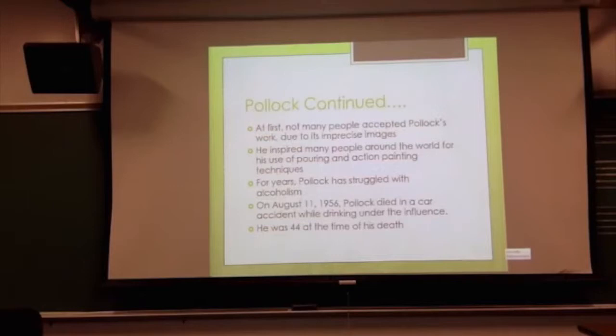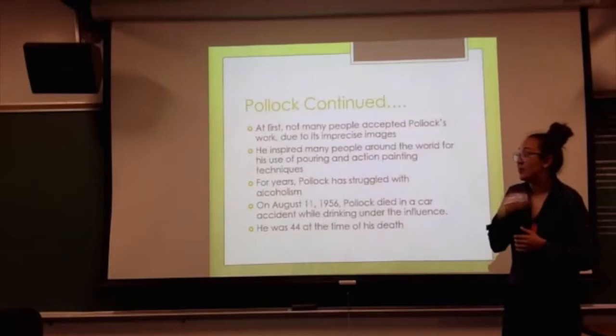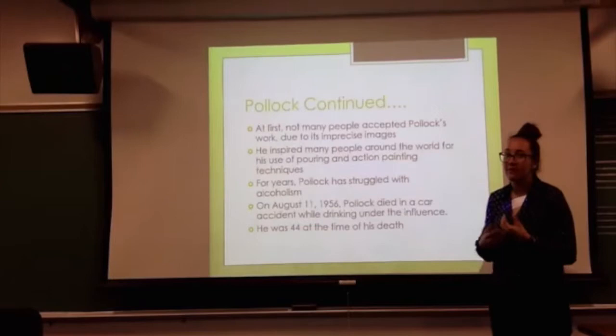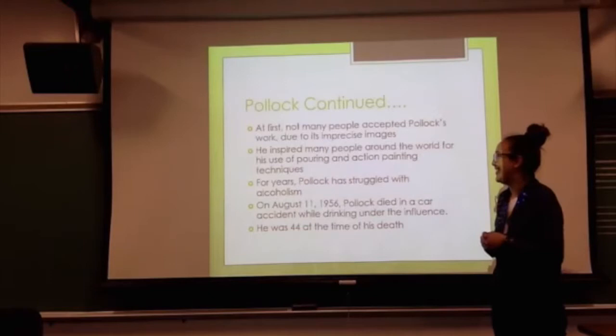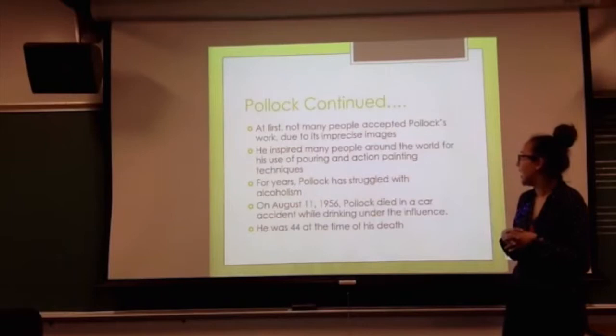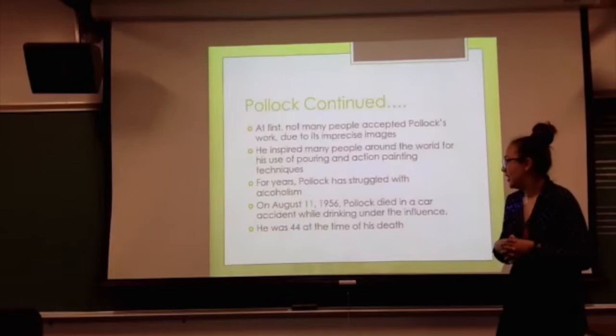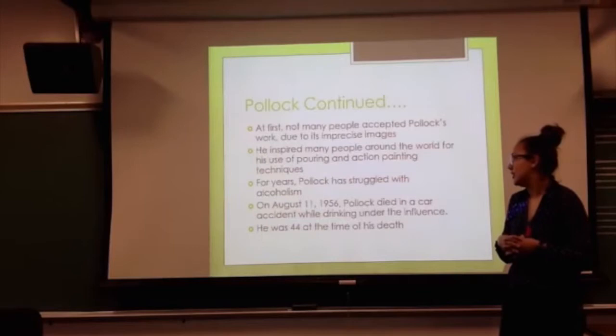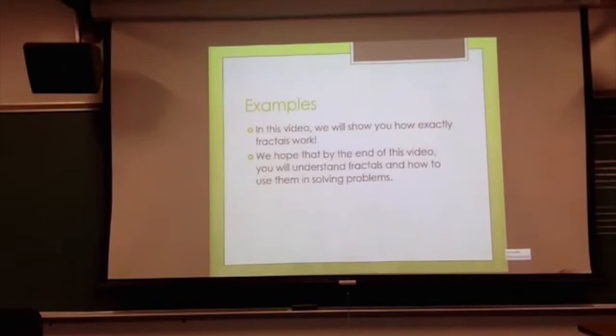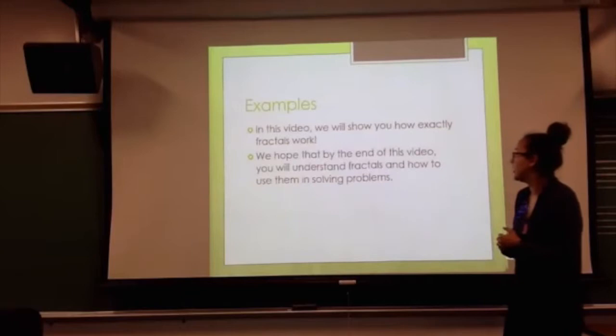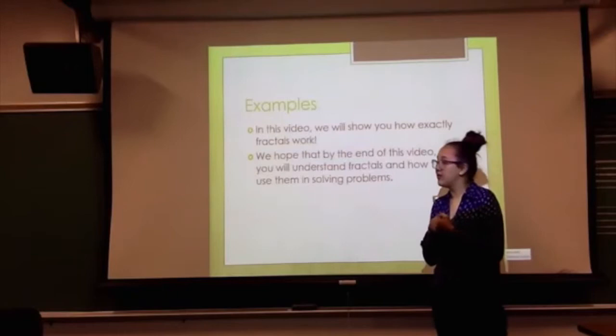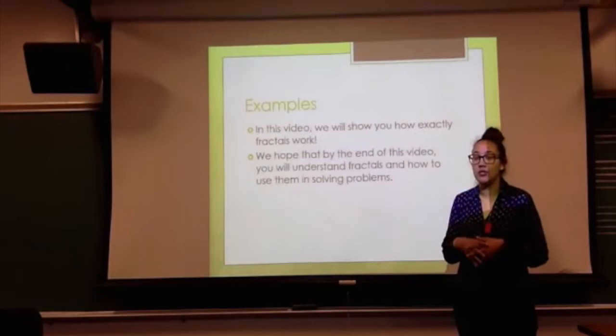At first, not many people accepted Pollock's work due to his imprecise images — people just looked at it as a bunch of paint and dots. He inspired many people around the world for his use of pouring and action painting techniques. For years, Pollock struggled with alcoholism. On August 11, 1956, Pollock died in a car accident while driving under the influence. He was 44 at the time of his death. We found a clip to better explain fractals and how they relate to Jackson Pollock.